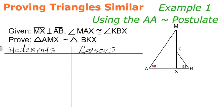Example one, we're going to be using the angle-angle similarity postulate to write a similarity proof. Here we have a diagram. The given is that segment MX is perpendicular to segment AB and that angle MAX is congruent to angle KBX. We're going to now mark that and we're going to write that into our given.